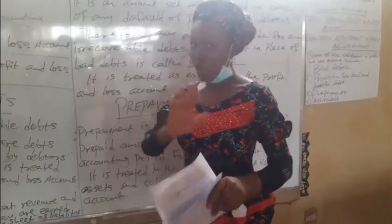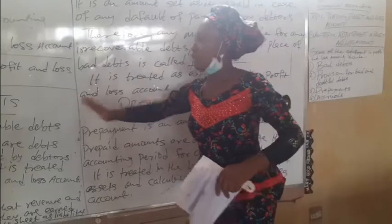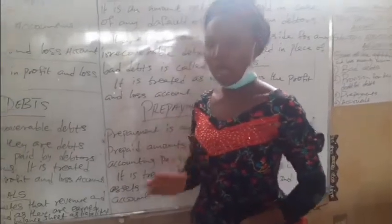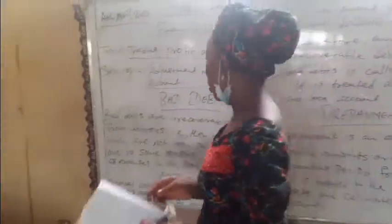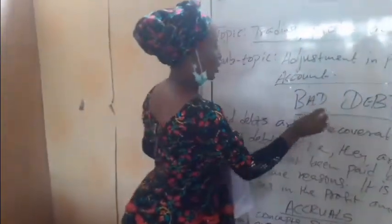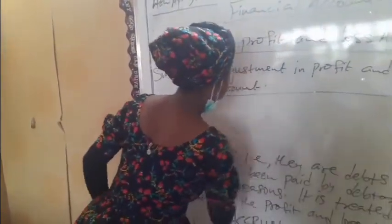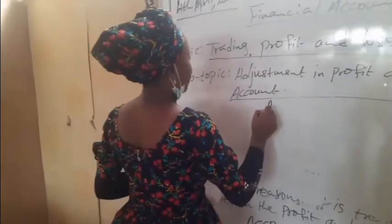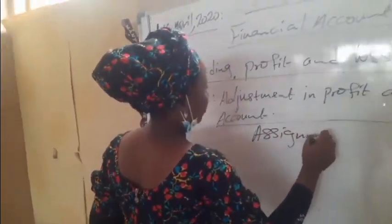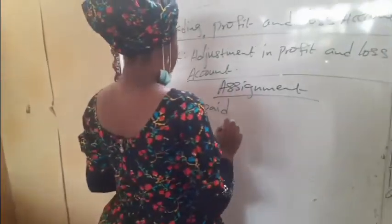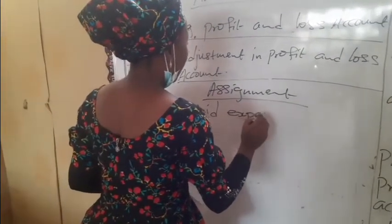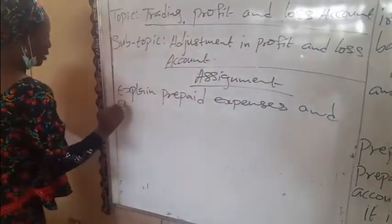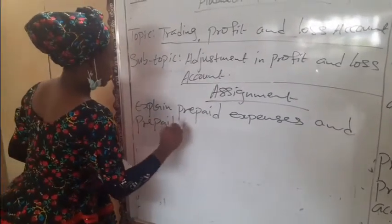Today we stop our lesson here. Before we end today's lesson, I will give you an assignment for you to try at home. I will copy the assignment on the board. Your assignment is: explain prepaid expenses and prepaid income.